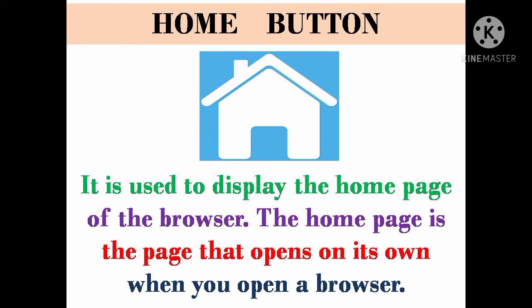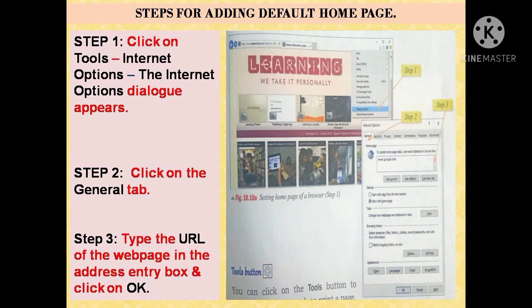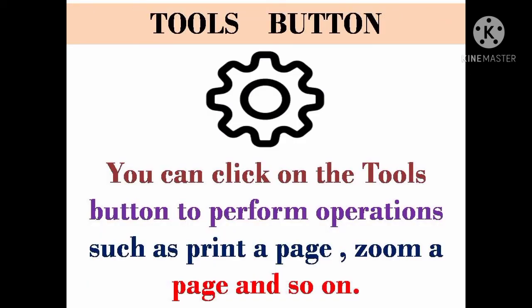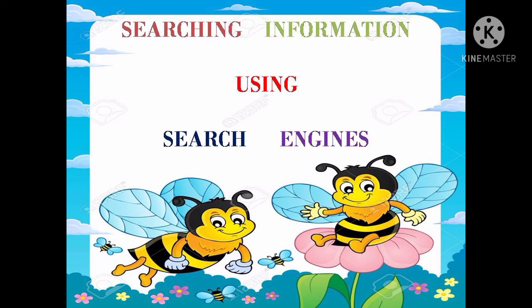Next is the Home button. Its symbol is like a house. It is used to display the home page of the browser — the page that opens on its own when you open a browser. Steps for adding a default home page: Step 1: click on Tools, then Internet Options — the Internet Options dialog box appears. Step 2: click on the General tab. Step 3: type the URL of the web page in the address entry box and click OK. The Tools button symbol is like a settings button on your phone, and you can click it to perform operations such as printing a page or zooming a page.